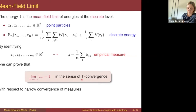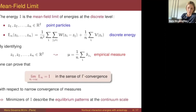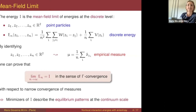This guarantees that if you are able to identify the minimizers of I, then you have a description of the minimizers at the discrete level when n, the number of particles, is big enough. In this context, I is called the mean-field limit of the discrete energies.